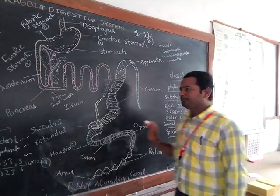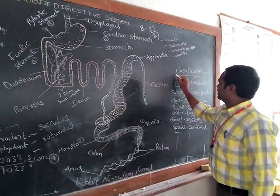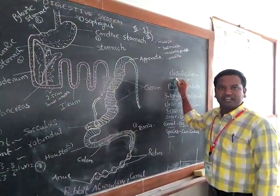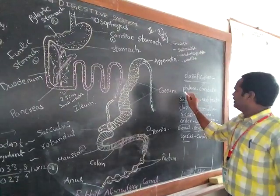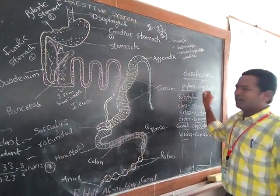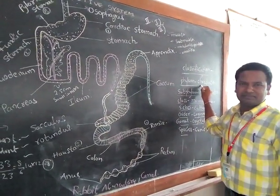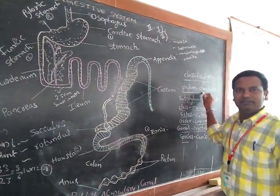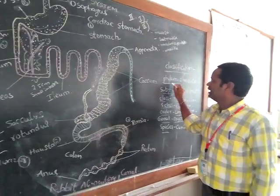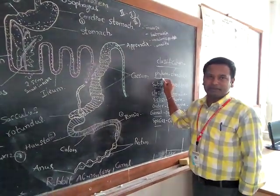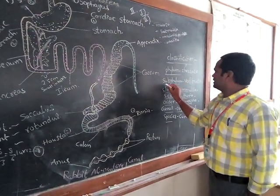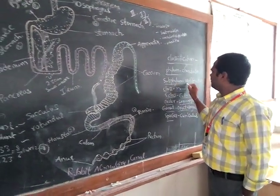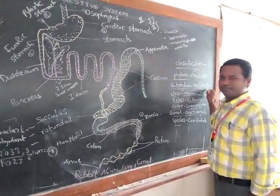First of all, we will study the classification of rabbit. Phylum: Chordata. Chordata means 'string bearing' — this is the Chordata phylum. Subphylum: Vertebrata.